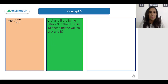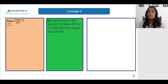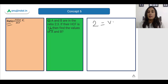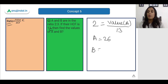Now let us see the last concept. If we are given the ratio of two numbers, that ratio value equals the number divided by the HCF. For example, if two numbers are in the ratio 2:3 and the HCF is 13, then the first number a = 2 × 13 = 26.